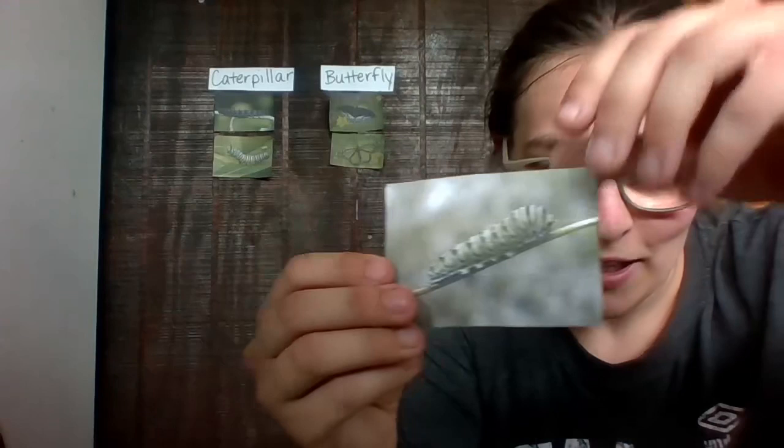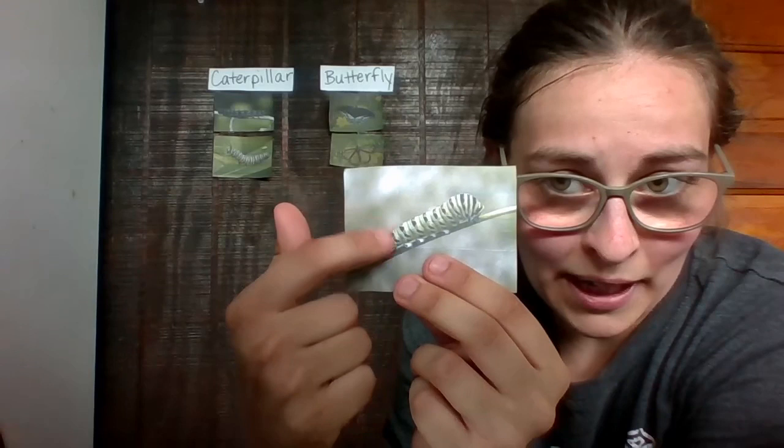The next one we're gonna do is called a black swallowtail. This one actually looks a lot like the monarch one. This also has yellow and white, but it's got black dots going all the way up. So they look pretty similar.